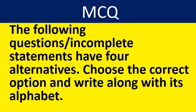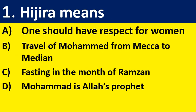The following questions are incomplete statements and have 4 alternatives. Choose the correct option and write it along with its alphabet. First question: Hijira means — option A: one should have respect for women; option B: travel of Muhammad from Mecca to Medina; option C: fasting in the month of Ramzan; option D: Muhammad is Allah's prophet. You can write the answer down; I will present the answer after the questions.